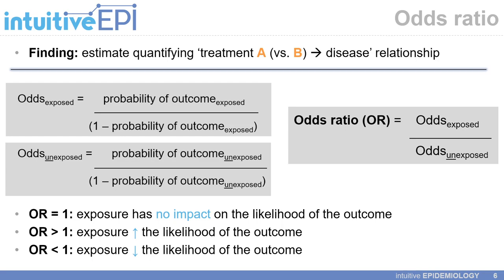An odds ratio, or OR, is the odds of someone experiencing the disease given they were exposed, divided by the odds of somebody experiencing the disease given they were unexposed. An odds ratio equal to one indicates that the exposure has no impact on the likelihood of the outcome occurring — in other words, the treatment has no impact on the occurrence of the disease, for better or worse. If the odds ratio is greater than one, it indicates that the exposure increases the likelihood of the outcome. If the odds ratio is less than one, it indicates that the exposure decreases the likelihood of the outcome occurring.